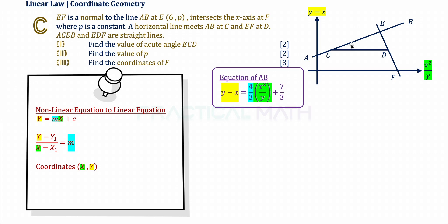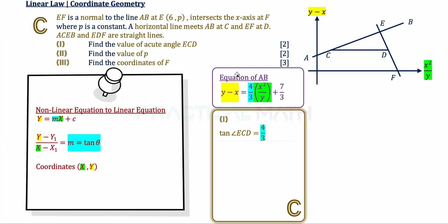Before finding any angles in this linear law question, let's recall that gradient equals tangent theta, because tangent theta is the opposite over adjacent — change in vertical over change in horizontal. So gradient equals tangent theta. Using our part A solution, tangent of angle ECD equals the gradient of AB, which we found to be 4/3. Therefore angle ECD equals tangent inverse of 4/3, giving us 0.927 radians. That's the answer for C part 1.